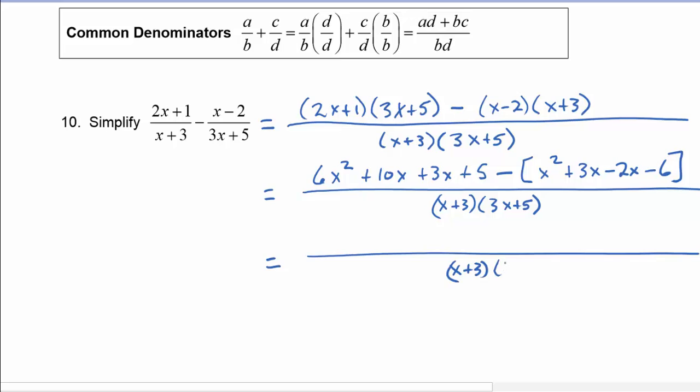And we continue to simplify. We keep the same denominator and we get 6x squared plus 13x plus 5, and then we're going to be subtracting x squared plus x minus 6. The denominator continues.